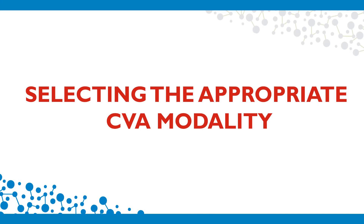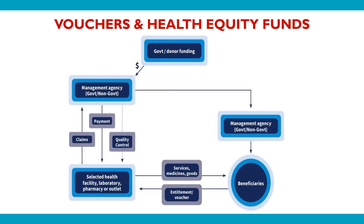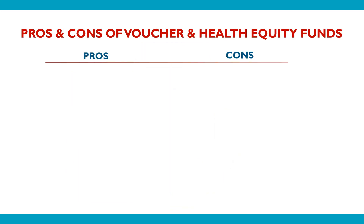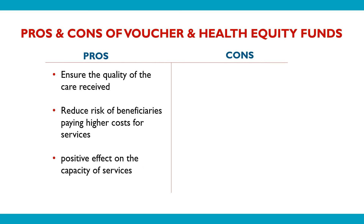We will now look at different CVA modalities that can contribute to health outcomes. You will see from the diagram how vouchers work. The management agency — which can be an INGO or UN agency — directly contracts a health service provider such as a hospital, pharmacy, or another health outlet based on their own criteria. Beneficiaries then receive the vouchers to access these pre-selected health providers. The voucher can be seen as a health insurance card — patients do not pay for anything but present the card to the health provider and receive the service. The agency then receives the bill from the health service provider and covers the costs. The pros of using this modality are that the agency can ensure quality of services, and beneficiaries do not have to pay out of pocket and then get reimbursed, so financial barriers are significantly removed.